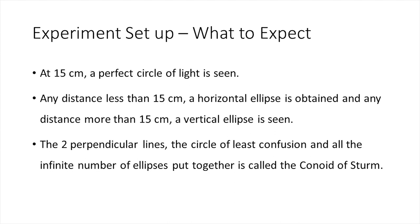In between the circle of least confusion and the two foci, we should expect infinite number of horizontal and vertical ellipses. The whole thing, the two foci, the circle of least confusion, and the ellipses together constitute the conoid of Sturm.